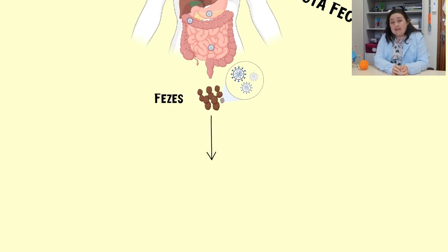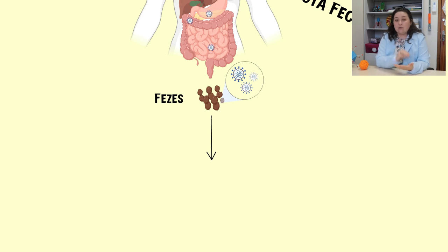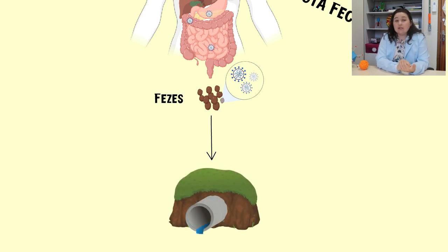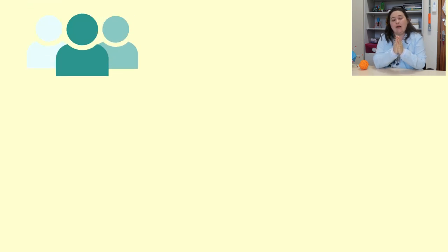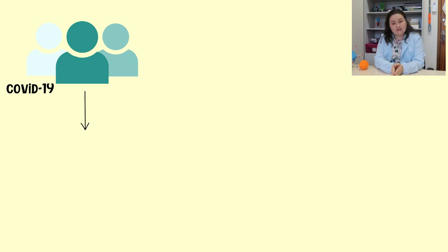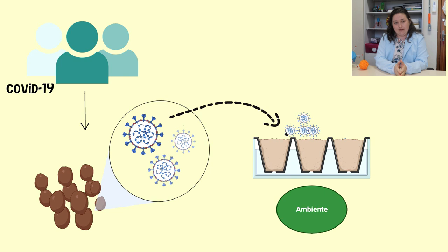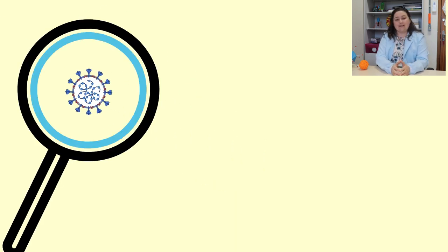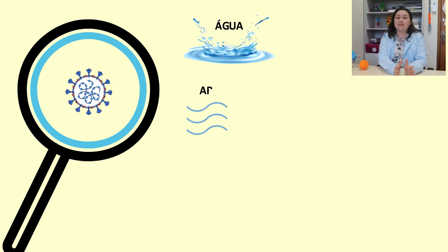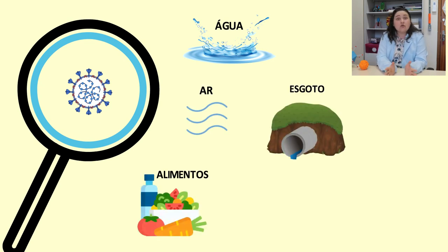Vamos pensar. Se esse vírus é excretado nas fezes de pacientes contaminados, então sua busca em esgotos pode ser uma importante ferramenta epidemiológica para saber o que está circulando nessa população infectada. Dessa forma, o esgoto de comunidades afetadas por Covid-19 contém o SARS-CoV-2, podendo ser uma fonte interessante para pesquisar os tipos virais que circulam em determinada população. Mas afinal, como é possível analisar vírus em águas, ar, esgotos, alimentos e em superfícies?